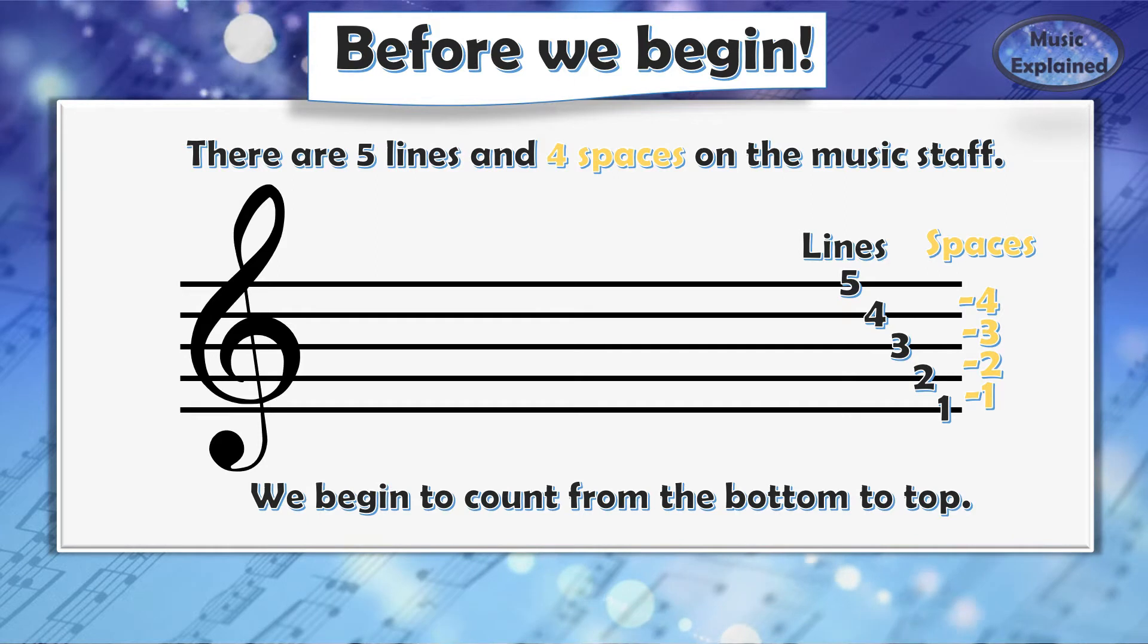Before we begin, we need to talk about the lines and the spaces on the music staff. There are five lines and four spaces on the music staff. We count from bottom to top: one, two, three, four, five.